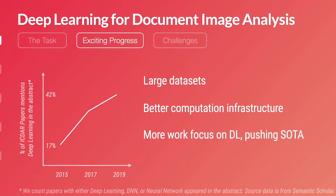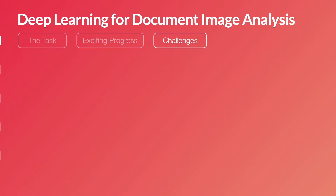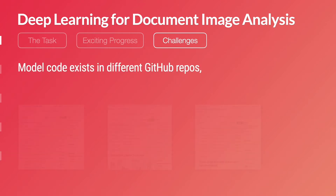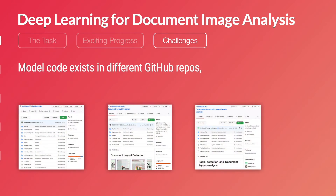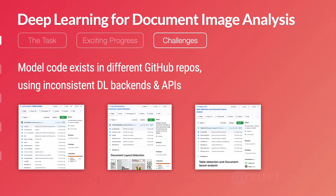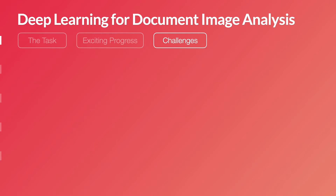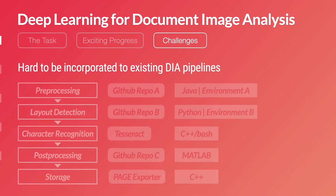As larger datasets and better computation infrastructure are becoming available, there is more and more research focusing on deep learning and improving the state of the art. However, despite the exciting progress, there's a key limitation in this field. The model code exists in different GitHub repos and they are written using inconsistent deep learning backends with different APIs, making it very hard to incorporate these models into existing DIA pipelines.